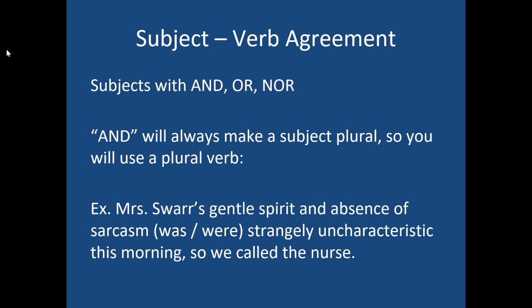We have subjects that have been joined by a conjunction: and, or, nor. When we use the word 'and', we're making something plural, which makes a lot of sense because 'and' is like a plus sign. So you're making something plural, so you should have a plural verb. That's pretty straightforward.